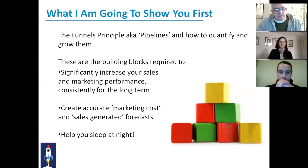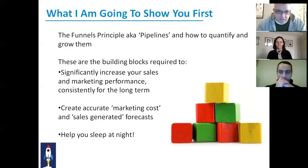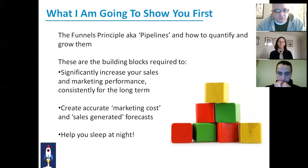The second thing they do is they can create an accurate marketing cost and sales generated forecast, which will help you sleep at night. Quite often people have what I refer to as forlorn hope marketing — they think that if they do one single thing, it'll work and change how their business markets itself, and suddenly all the sales will come in. It doesn't work like that. Once you understand your marketing funnels, you can start planning forward: I'm going to spend this amount of money, take these actions, and these sales will be generated.